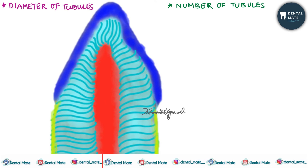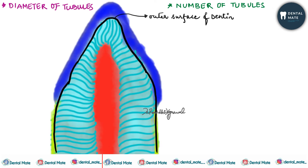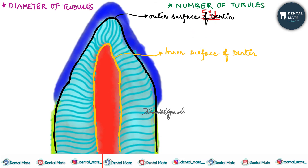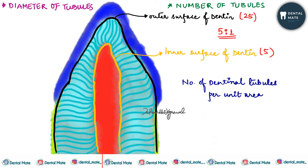Now, looking at some structural details of dentinal tubules: the ratio between the outer and the inner dentine surface is 5 to 1, meaning the outer surface is five times broader than the inner surface. The tubules are farther apart in the peripheral layers, whereas they are closely packed near the pulp.